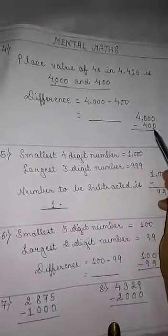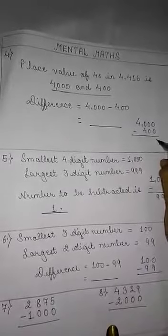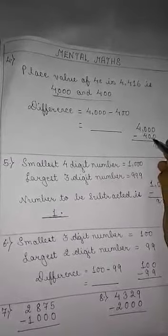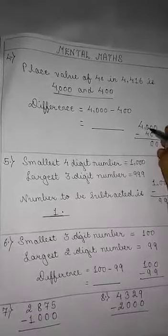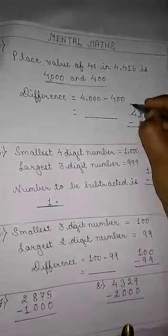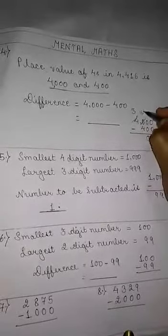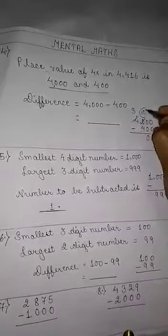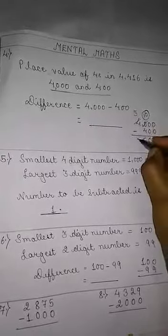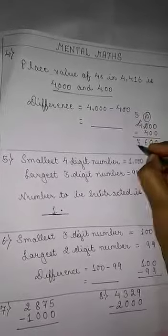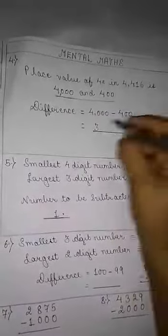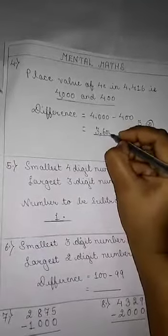4000 minus 400: 0 minus 0 is 0. Again, 0 minus 0 is 0. Since 0 is smaller than 4, we carry 1 from 4 — it becomes 3 here, and 10 here. 10 minus 4 is 6; we write 6. And 3 is remaining; we write 3. Hence, our required answer is 3600.